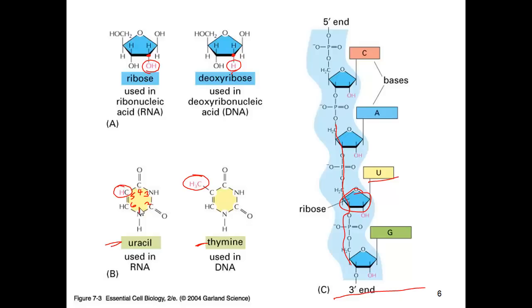There are at least two possible reasons why thymine is used in DNA. One is the methyl group makes thymine a little more stable, which is if you're trying to preserve information for long periods of time, that makes sense.